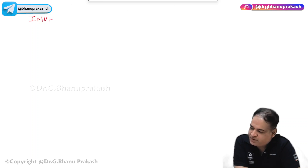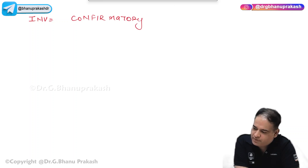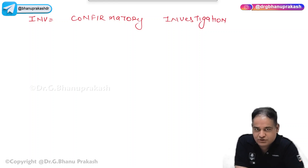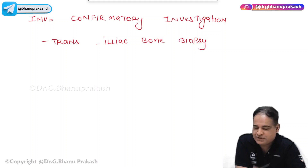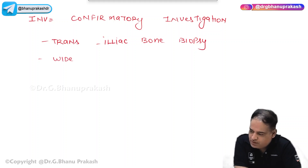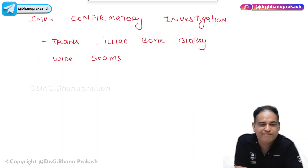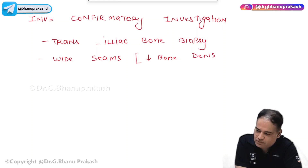The confirmatory investigation for osteomalacia is a transiliac bone biopsy — a bone biopsy taken from the ilium. It shows wide seams of bone and decreased bone density.